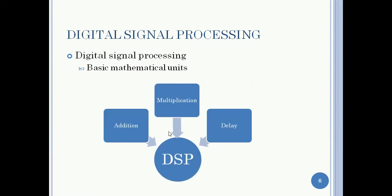In the case of digital signal processing, the signal operations are carried out on discrete time signals. The main mathematical units or functional units in the digital signal processing system are the adder block, multiplier block, and the delay unit.